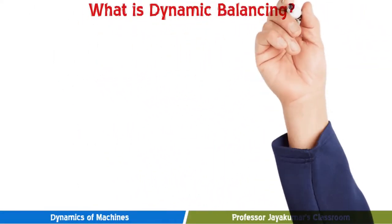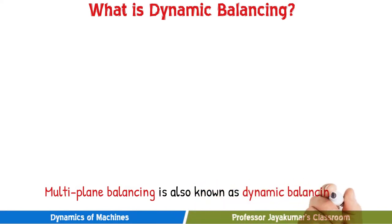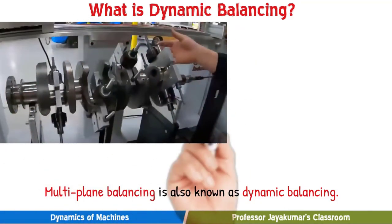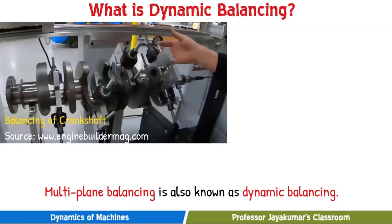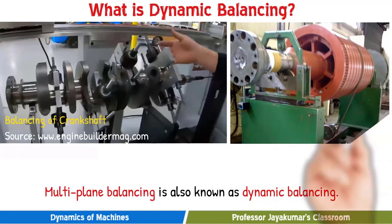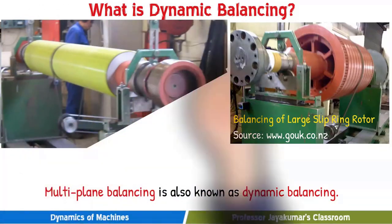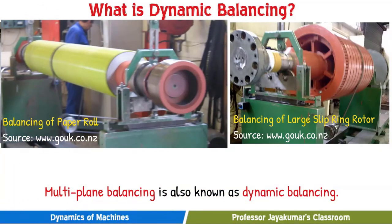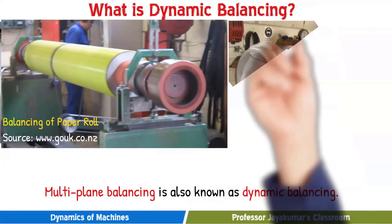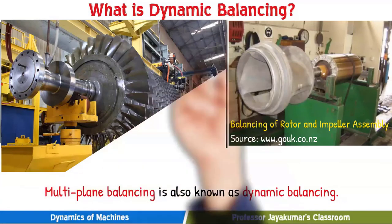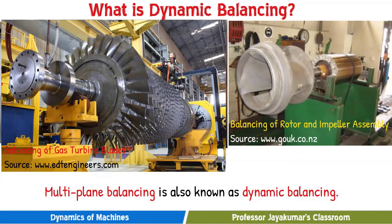Now let us discuss about dynamic balancing. What is it? Dynamic balancing is also known as multi-plane balancing. Let us understand that with a few practical applications: balancing of a complicated crankshaft, balancing of a large slip ring rotor, balancing of a paper roll which is essentially a longer shaft, balancing of a rotor and impeller assembly, and balancing of gas turbine blades. In all these practical applications, we have several rotating masses revolving in different planes.